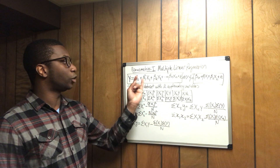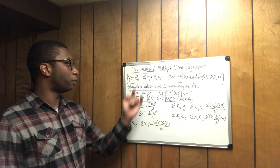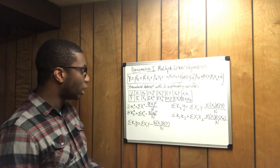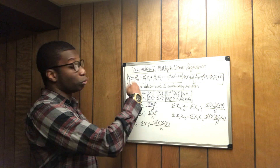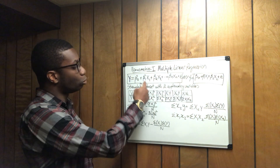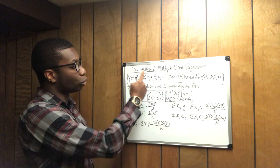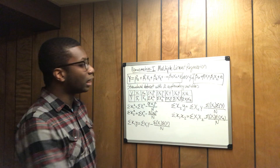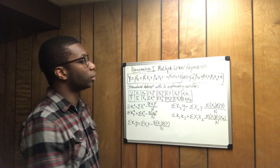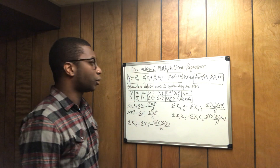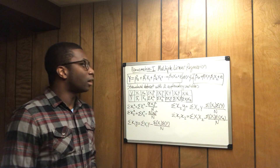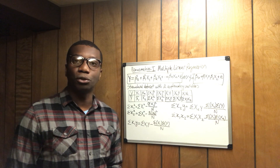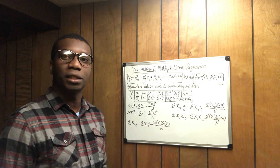These are the calculations needed to determine the coefficients of the two variables. Next week, I'm going to show you how to calculate the slopes of beta 1 and beta 2, and from there determine the values of x1 and x2. I'll also show you the operation for the standard error. Thank you very much — looking forward to teaching you how to calculate the slopes next week.